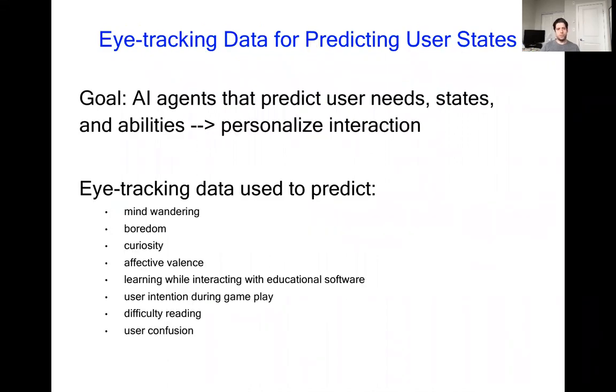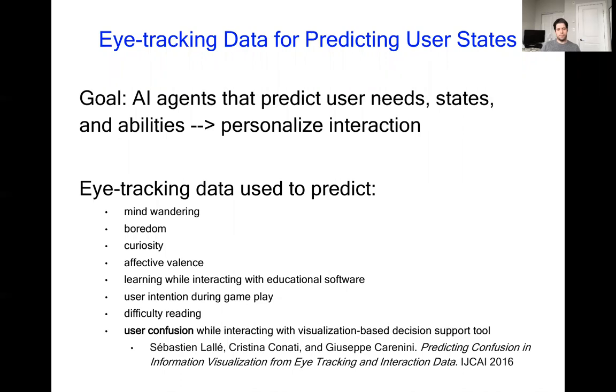Recently there's been a lot of interest in the idea of AI agents that can predict user needs, states, and abilities and personalize interaction accordingly. In particular, eye tracking data has been used to predict a variety of states such as mind-wandering, boredom, curiosity, difficulty reading, and user confusion. This last one is the subject of this paper.